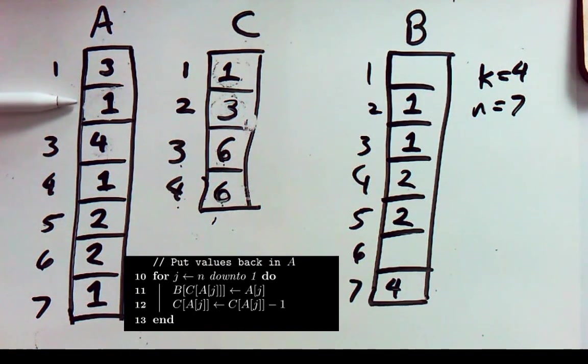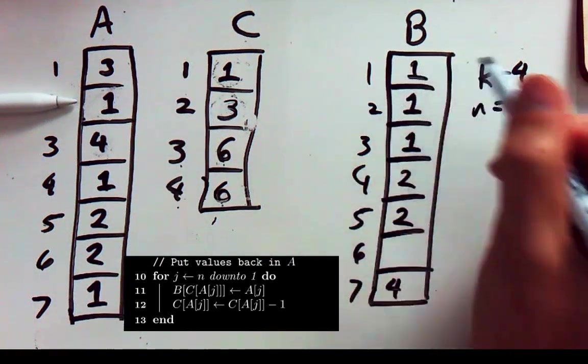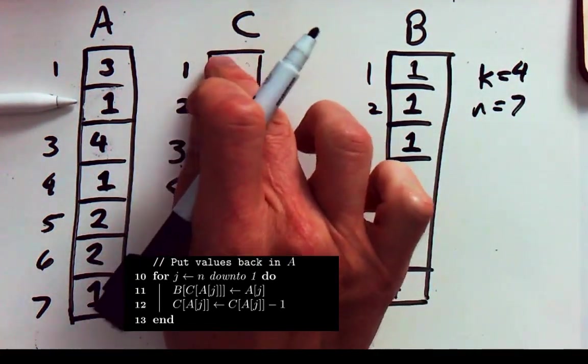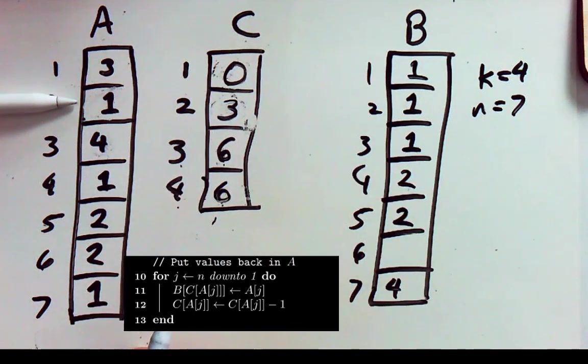Then we get to the 1 here. We look it up. 1. Oh that belongs in box 1. So we copy it over. We would update our counter. So if we happen to encounter another 1 we'd know where to put it.